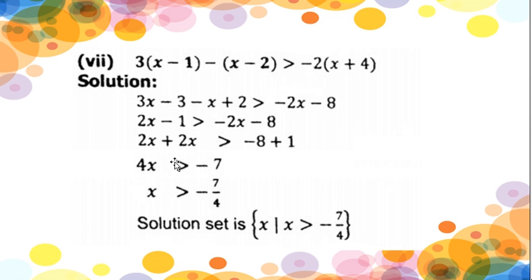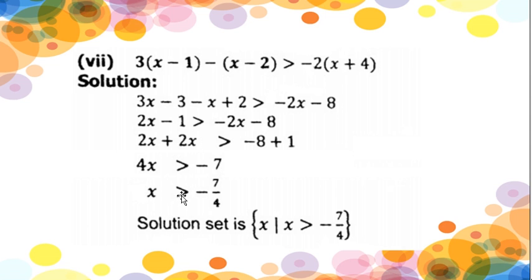Now combining variables to the left hand side and constants to the right hand side. This -2x moves to the left side becoming +2x, and this -1 moves to the right side becoming +1. So: 2x + 2x = 4x is greater than -8 + 1 = -7. Now 4 is a constant multiplying with x — moving it to the other side it will be divided. So: x is greater than -7/4. Finally, the value of x is greater than -7/4.